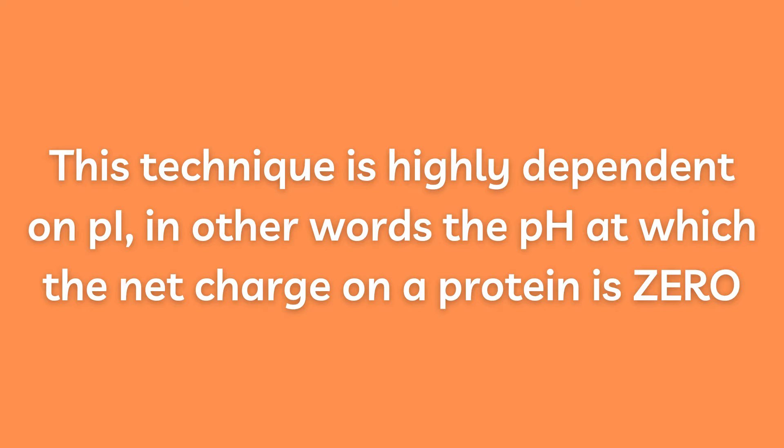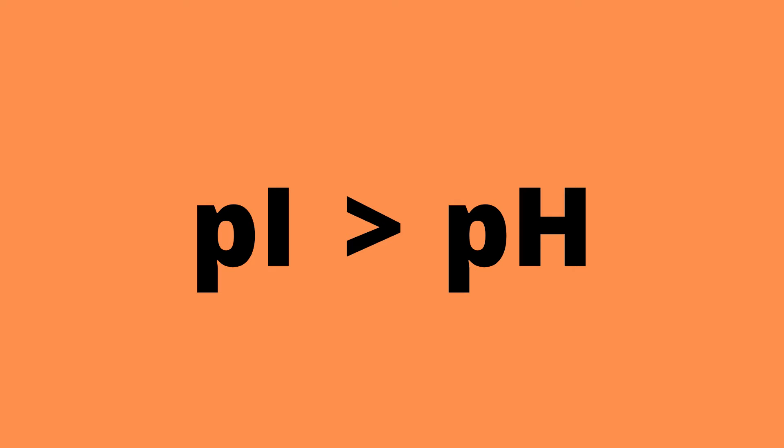In short, in a buffered solution which has a pH lower than the protein's Pi, the protein is positively charged or protonated and will subsequently bind to the negatively charged functional group of a cation exchange resin.